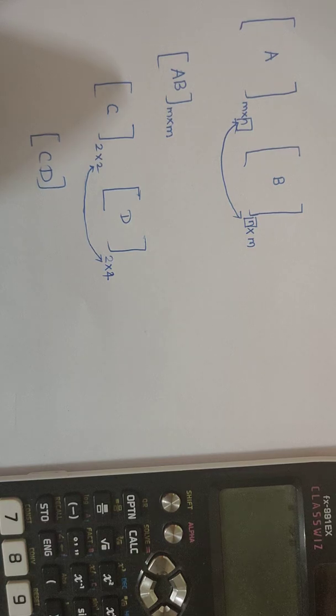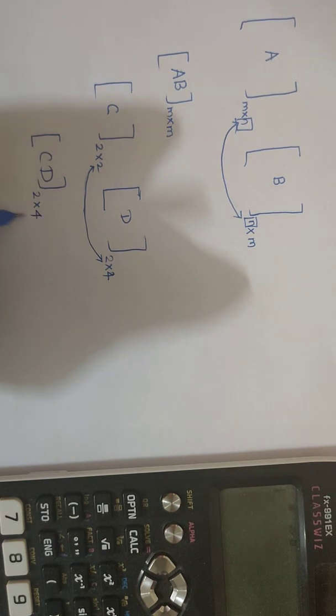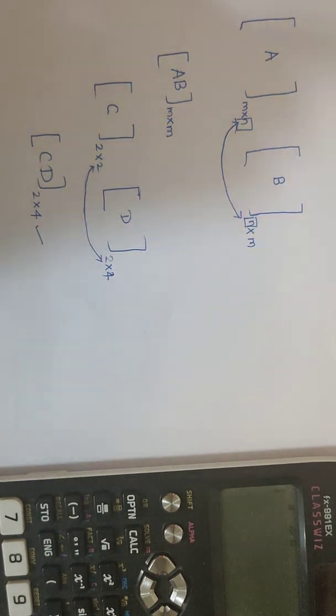And the resultant matrix, that is matrix CD, would be of the order—yes, what should be the order? So I want you to pause the video for a few seconds and try to come up with your answer. So I hope you might have come up with your answer. So what would be the order of this resultant matrix or the product matrix CD? 2 cross 4, correct.